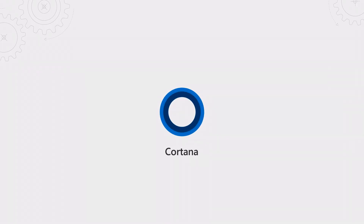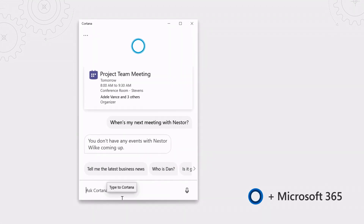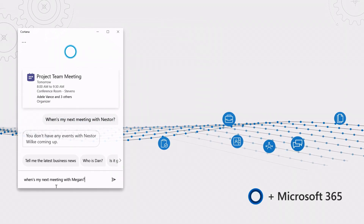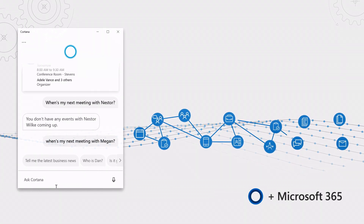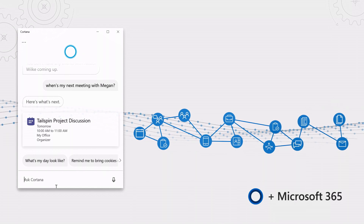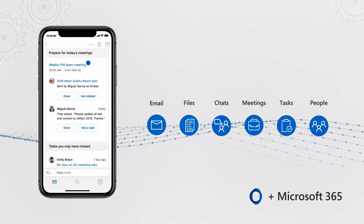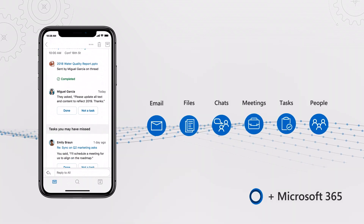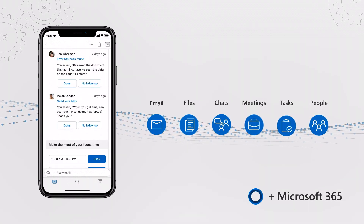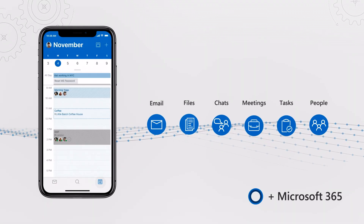The combination of Cortana together with Microsoft 365 provides the foundation for natural and intelligent interactions with your Microsoft 365 apps and data. Cortana natively integrates with the Microsoft Graph to make sense of the millions of signals in the Office substrate that run Microsoft 365 services. This includes all your emails, files, chats, meetings, to-do lists, the people you work with, and more. It lights up new productivity experiences, personalized to individual users, and supports natural language interaction.